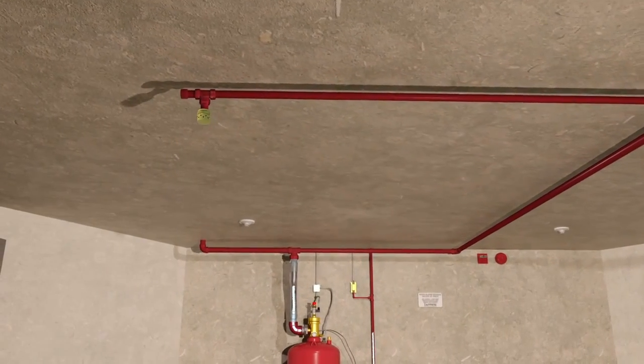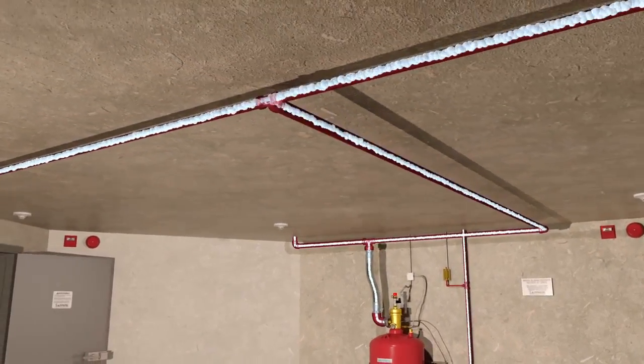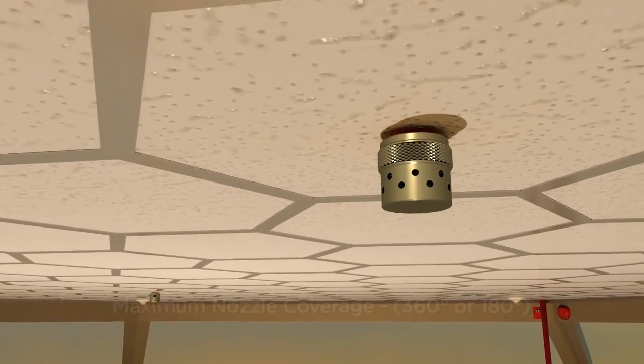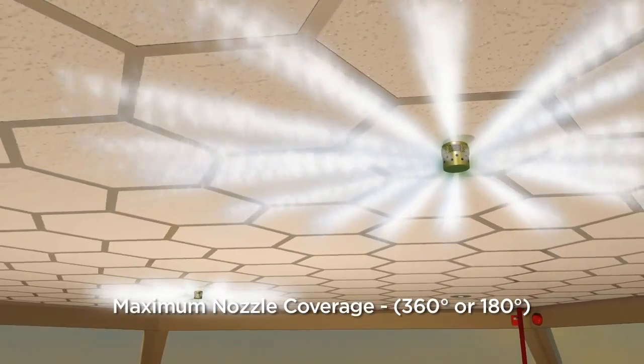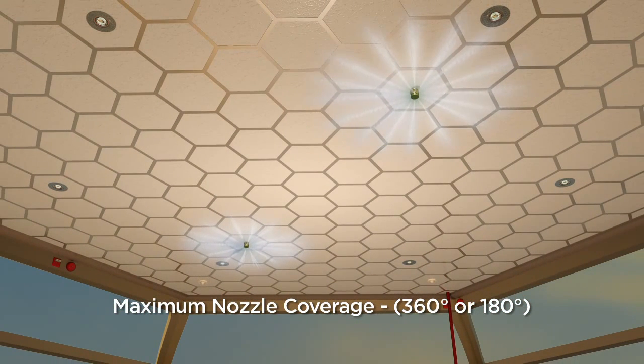Once actuated, the Sapphire system distributes agent throughout the piping network to the protected areas. The fire suppression fluid discharges through fixed nozzles uniformly distributed in a 360 or 180 degree pattern, flooding the hazard area.